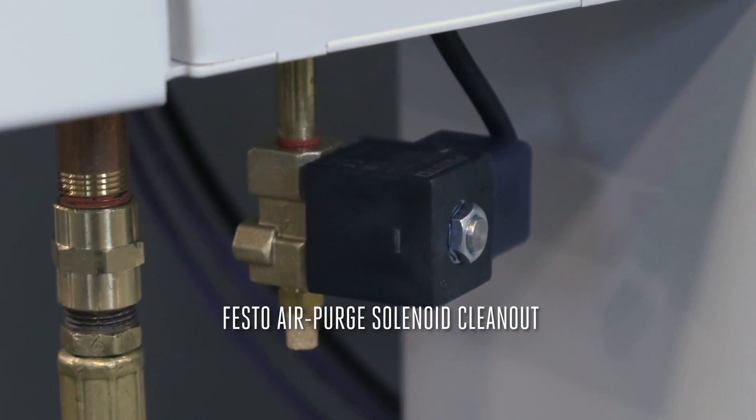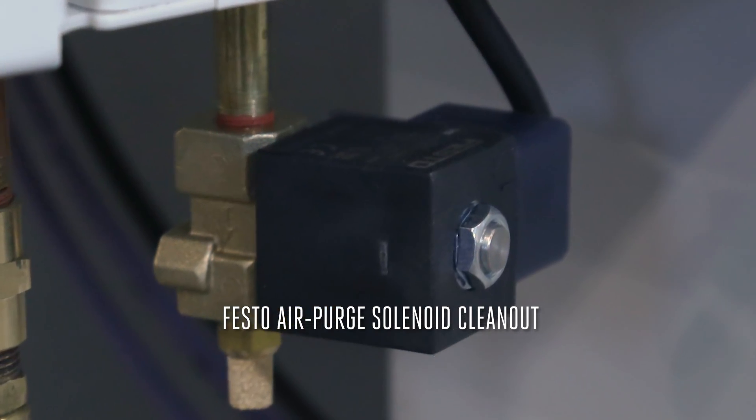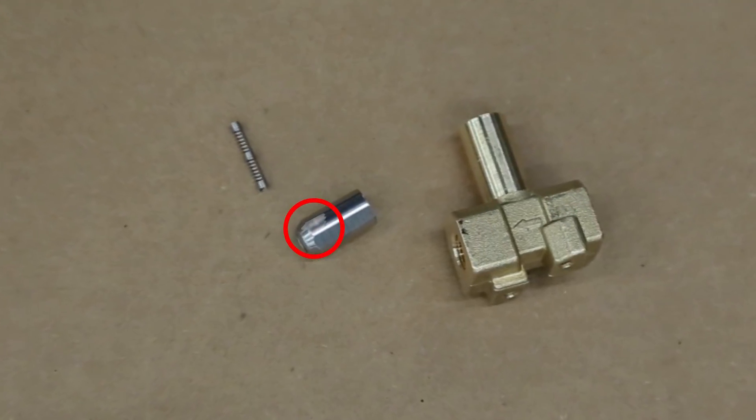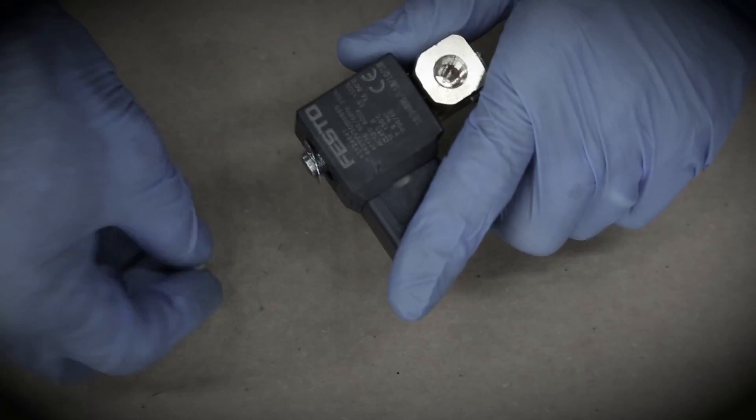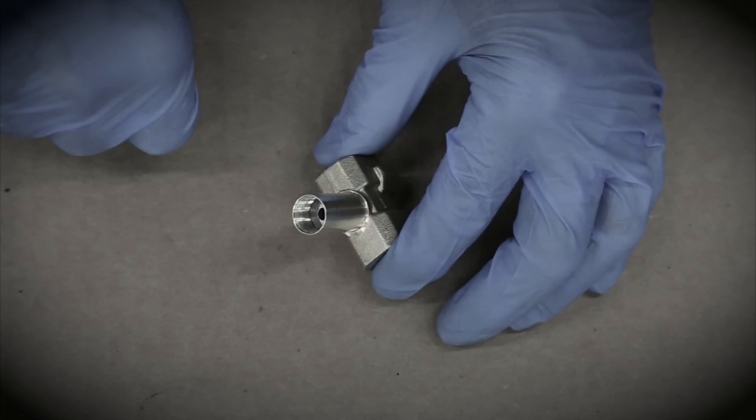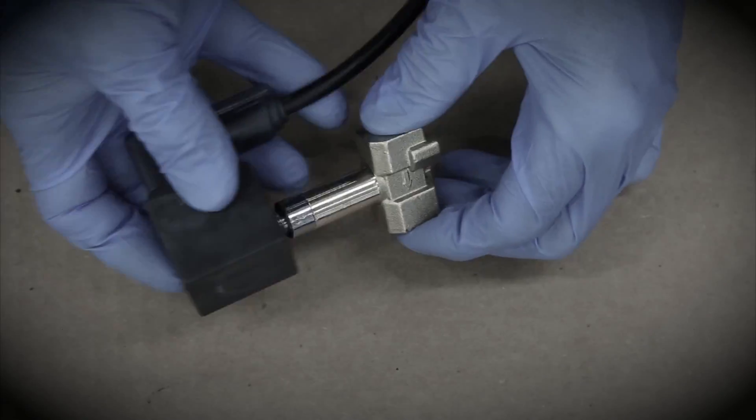If the air purge valve on your Haas machine is leaking or not functioning correctly, the most likely cause is debris inside the air purge solenoid. Cleaning out the solenoid is a quick and easy way to restore the air purge system to its full functionality.